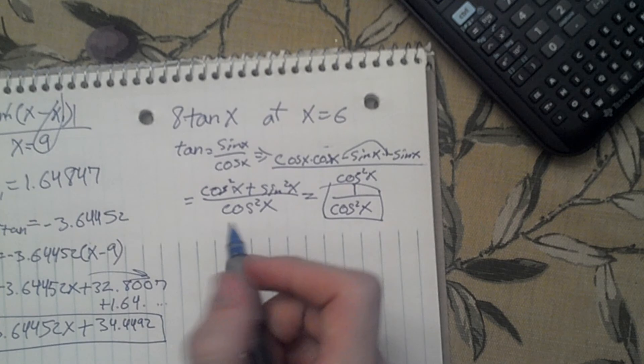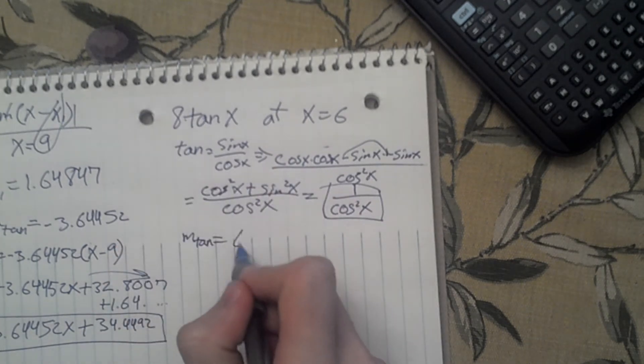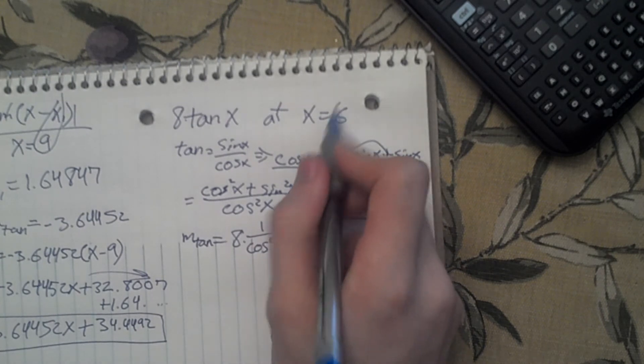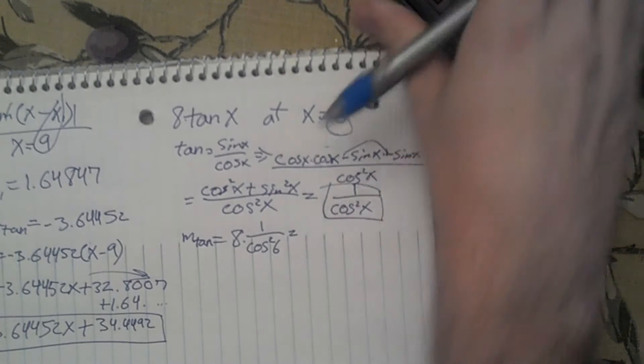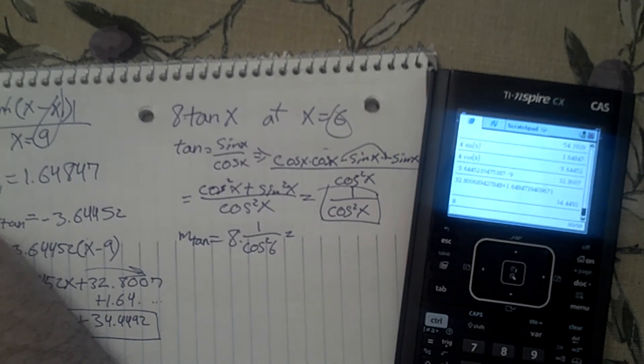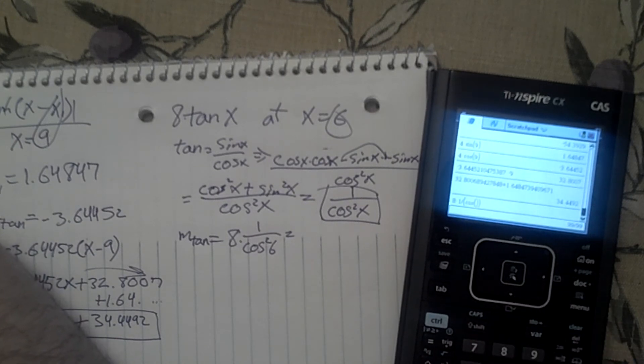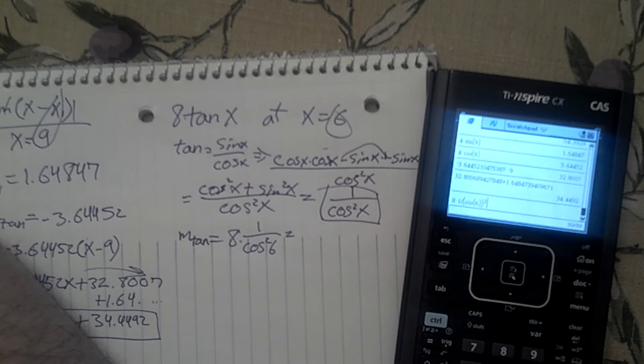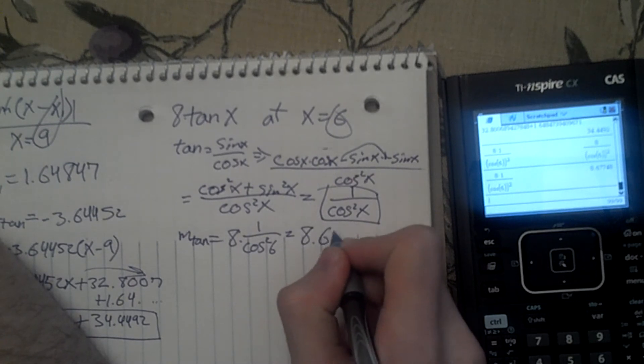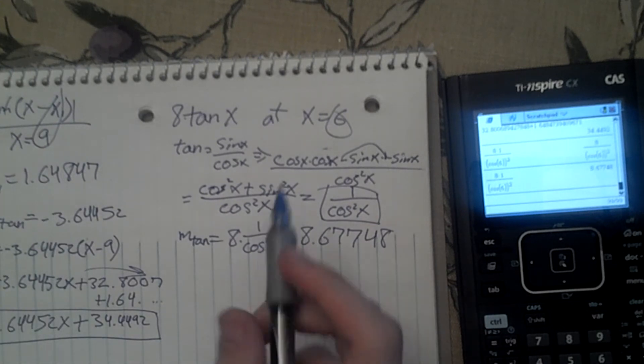So to find our m, we have to do 8 times 1 over cosine squared of 6. So we're going to get some very ugly number. 8 times 1 divided by cosine of 6 squared gives 8.67748. That's our m.